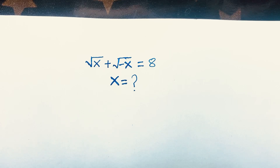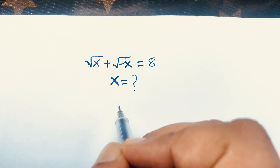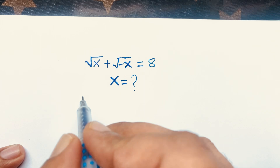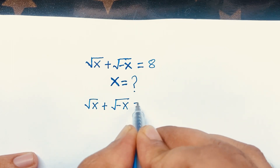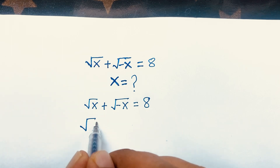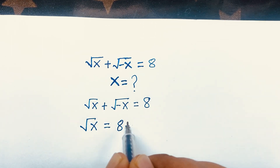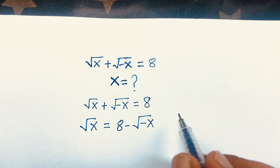Hello everyone. In this video we'll solve this interesting math question: square root of x plus square root of minus x is equal to 8, and we'll find out the value of x. Since we have minus x inside the square root, that's what makes it interesting. Our equation is √x + √(-x) = 8. We rearrange to get √x = 8 - √(-x), moving √(-x) to the right side.